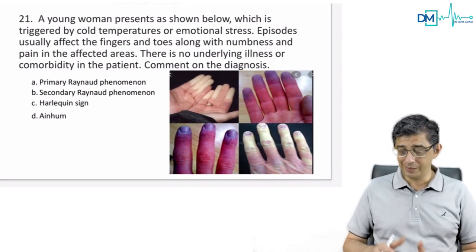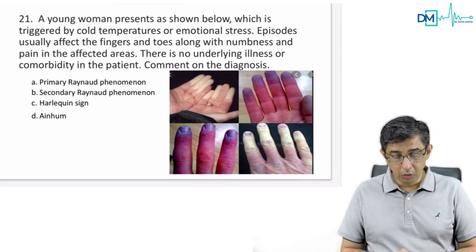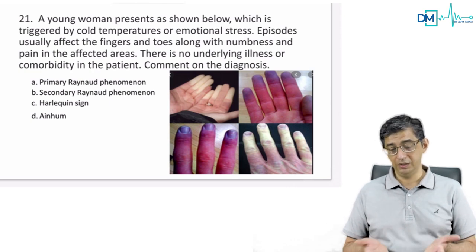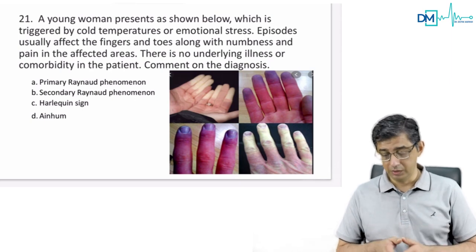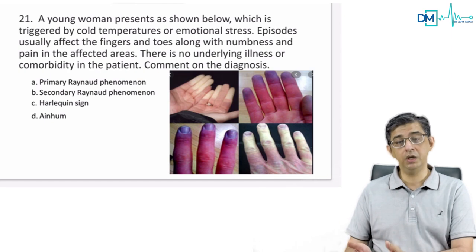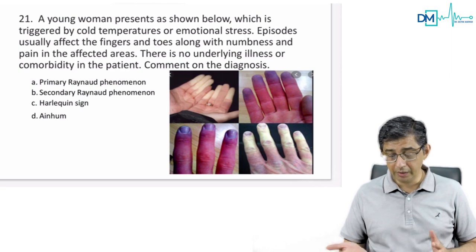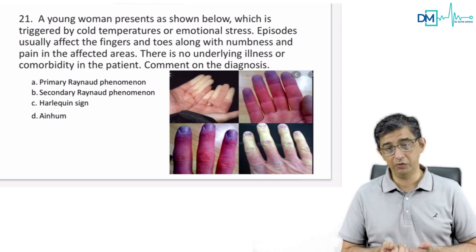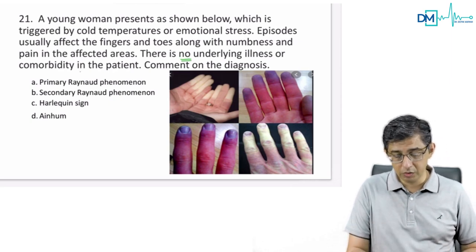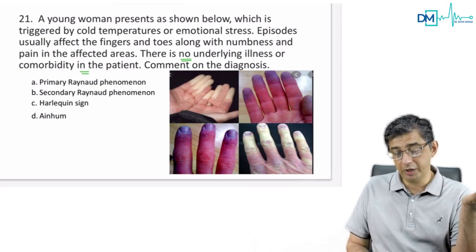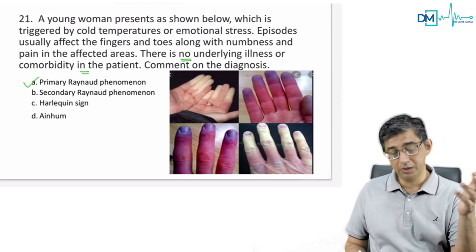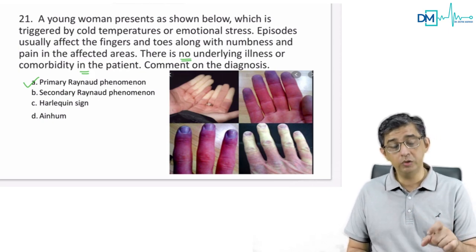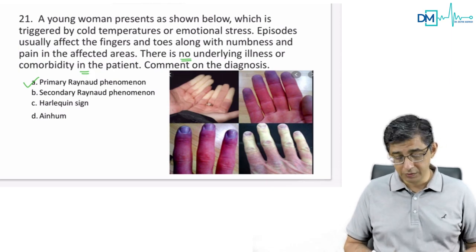A young woman having finger color changes from white to blue to red on cold temperature or emotional stress — this is Raynaud's phenomenon. Previously exams simply showed an image; this time a four-liner history was given. Is it primary or secondary? Primary Raynaud's is idiopathic. Secondary Raynaud's has an underlying connective tissue disorder. Since the question states there is no underlying illness and no comorbidity, it cannot be secondary. Answer: primary Raynaud's phenomenon, option A. Harlequin sign is pediatric; Anhem is gangrene of toes — both ruled out.